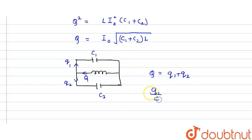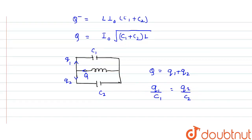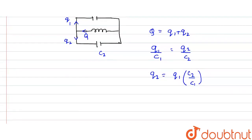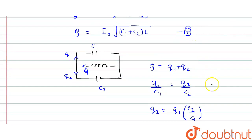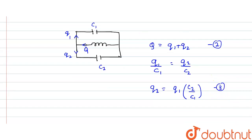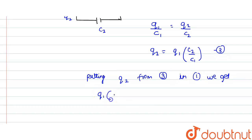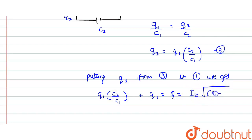The potential difference is basically Q divided by C. So Q1 divided by C1 equals Q2 divided by C2. From this expression, Q2 equals Q1 times C2 divided by C1. Let's call this equation 3, Q equals Q1 plus Q2 is equation 1, and Q equals I₀ times the square root of (C1 plus C2)·L is our known result. Substituting Q2 from equation 3 into equation 1, we get Q1 plus Q1·C2/C1 equals I₀·√((C1+C2)·L).